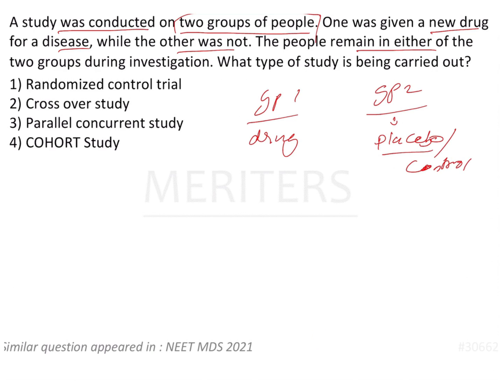The people remain in either of the two groups during the investigation — this is the main important keyword in this question. For example, group 1 may have persons X, Y, Z, and group 2 has persons A, B, C.